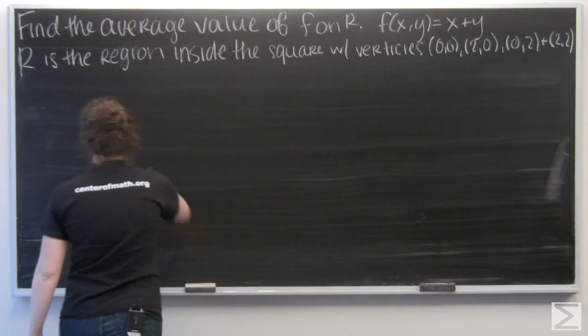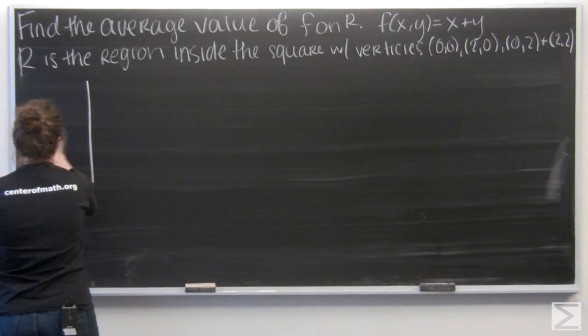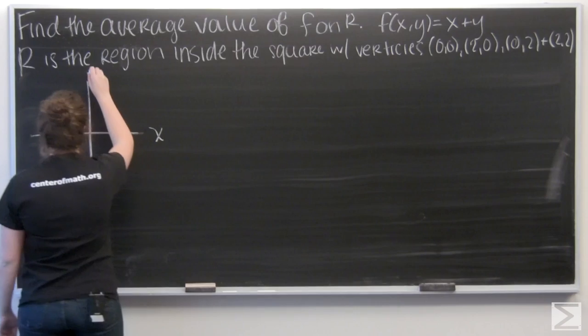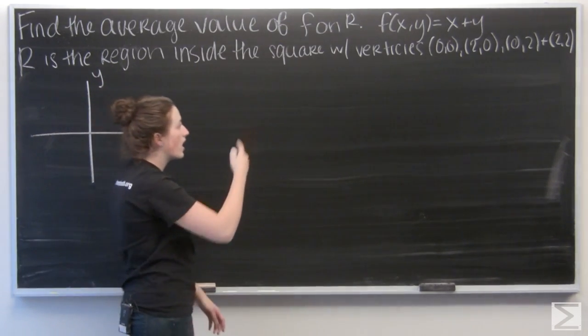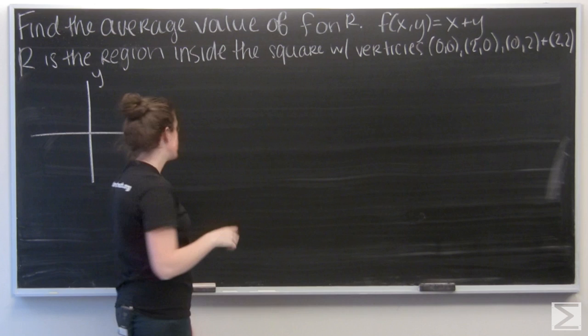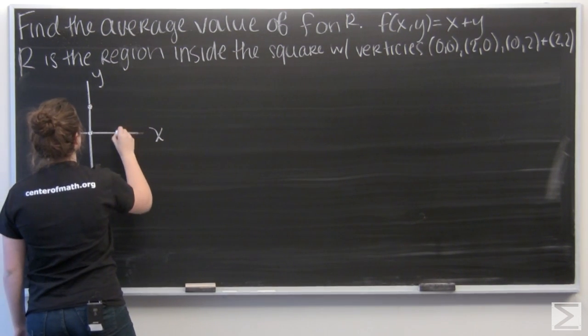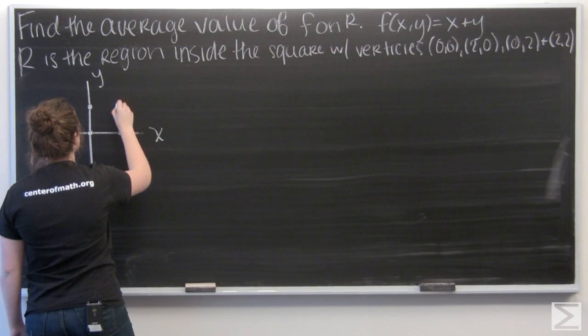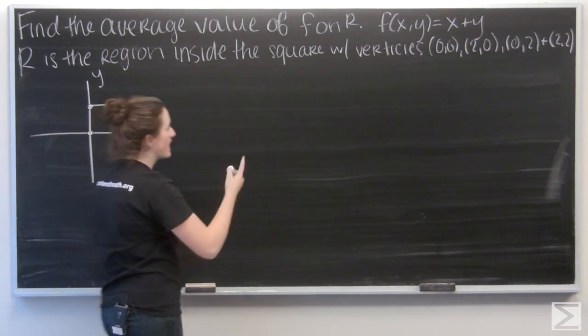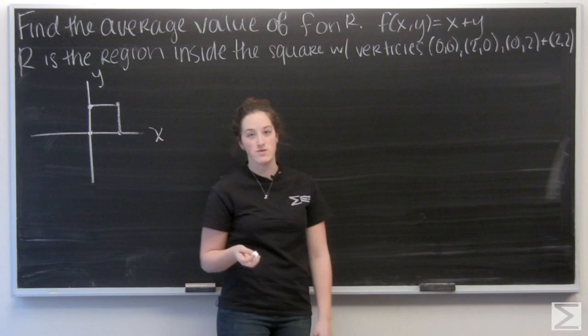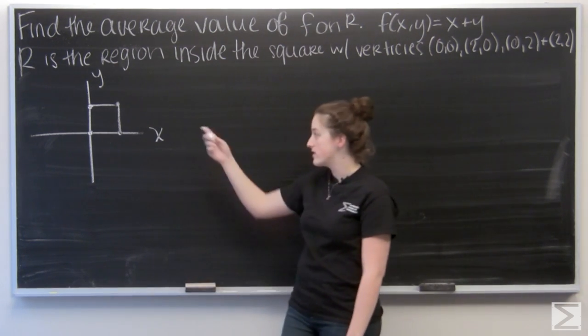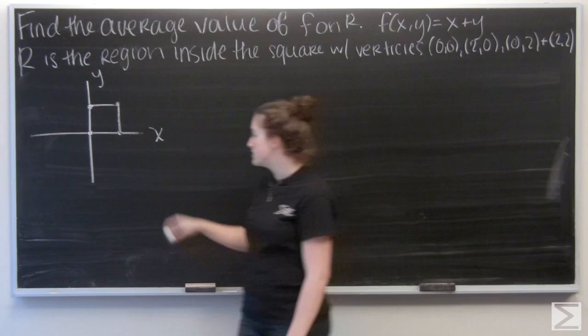So let me go ahead and draw those. So our first vertex is 0, 0 at the origin. And then I have 2, 0, 0, 2, and 2, 2. So I've got a square like this. Each side is length 2.